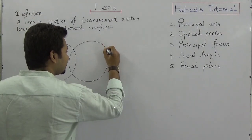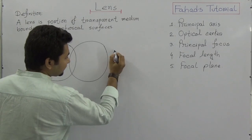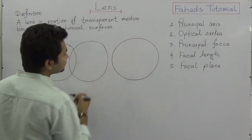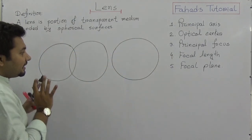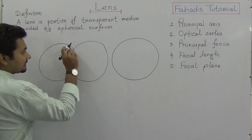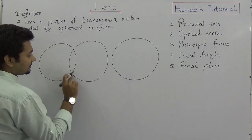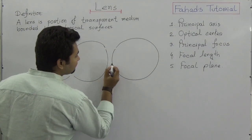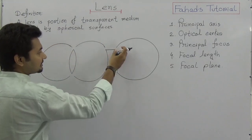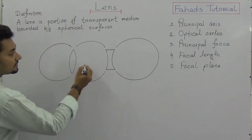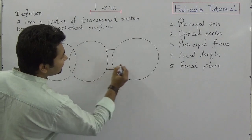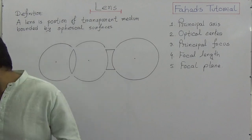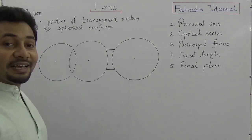If we consider another sphere drawn here, and if this part is taken, and if this part is also taken, then two types of lens will be created. Here is the center of curvature, here is the center of curvature, and here is another center of curvature. If we join them together, we find the principal axis.